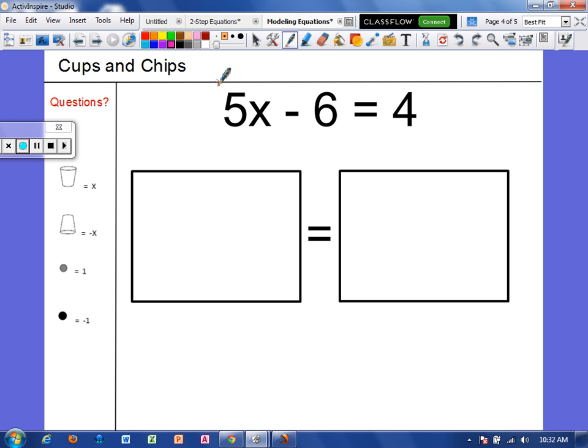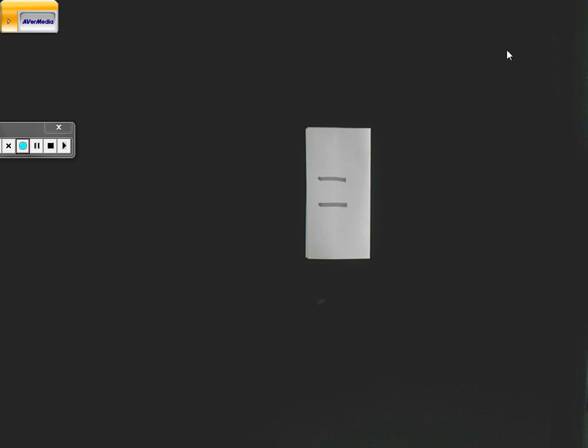All right, now let's use cups and chips to model the same equation, 5x minus 6 equals 4. I am about to pull up the document camera, but keep in mind you have a key right here in your notes. An upward facing cup is a positive x. A cup that's facing down is a negative x. If you see a yellow counter, that's a positive 1. And a red counter represents a negative 1.